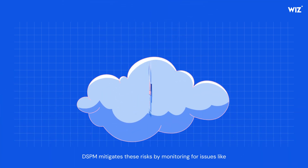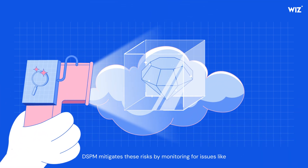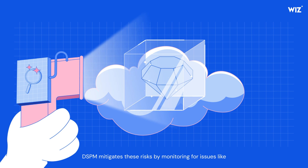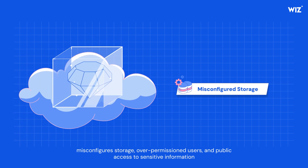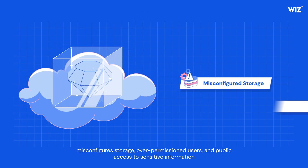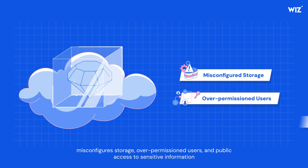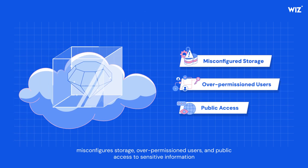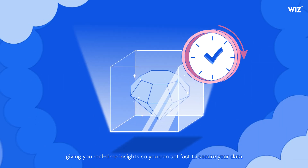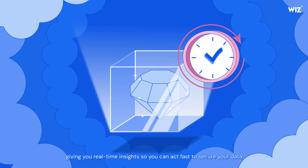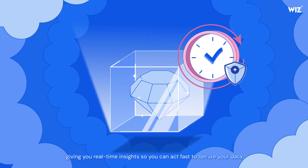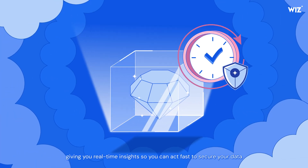DSPM mitigates these risks by monitoring for issues like misconfigured storage, over-permissioned users, and public access to sensitive information, giving you real-time insights so you can act fast to secure data.